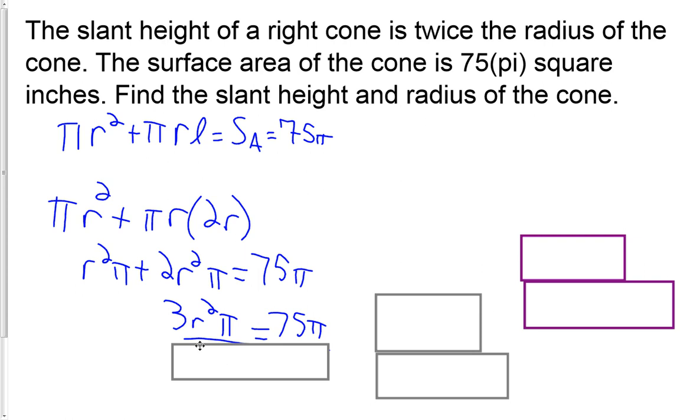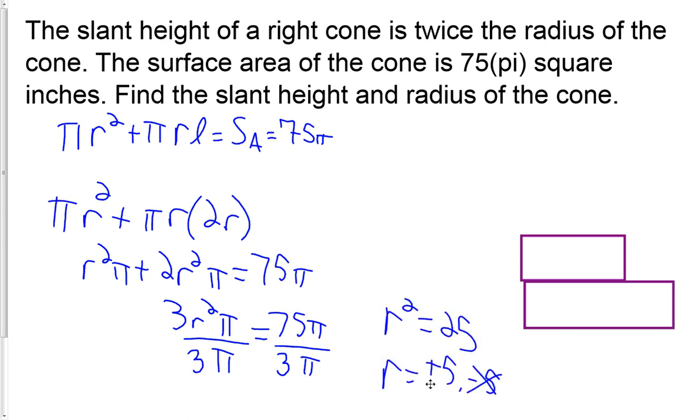Don't let the r squared get buried in here, but 3 pi is a number. So dividing by 3 pi on both sides, pi will cancel. 75 divided by 3 is 25. So we get r squared is 25. Our answer is plus or minus 5. Well, minus 5 doesn't work for a radius. So plus 5, and now finding the slant height, 2 times 5 is going to give us 10. Radius 5 inches, slant height 10 inches. That wraps up today's lesson. If you have any questions, please ask.